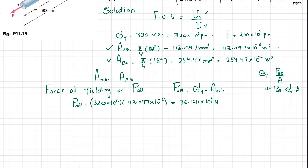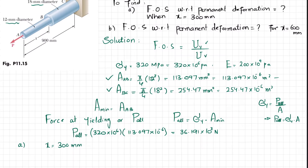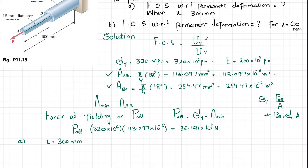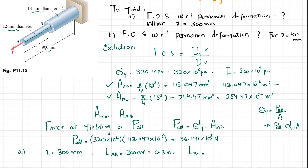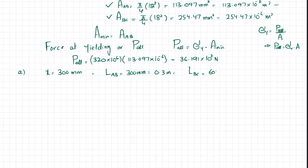Now moving to Part A for x equal to 300 millimeters. The length of AB equals 300 millimeters, which is 0.3 meters. The length of BC equals 900 minus 300 equals 600 millimeters, which is 0.6 meters.